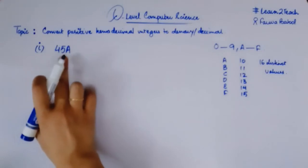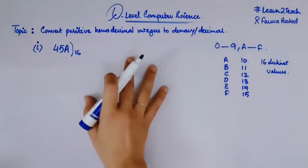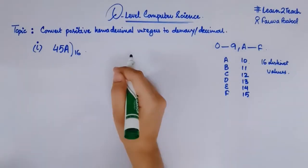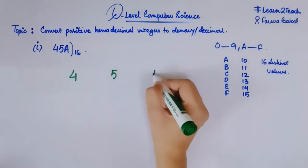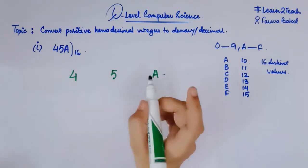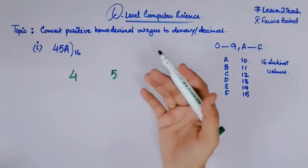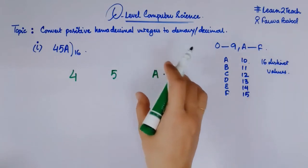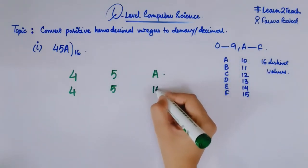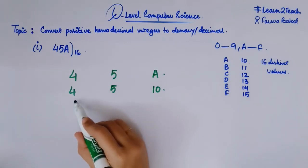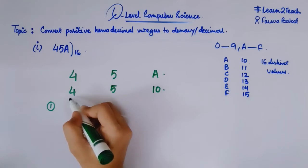My first step would be to write these numbers with some space: 4, 5, A. I need to change this A in terms of its numeric value because I am doing operations on it, so I need a numeric value for this alphabet. So 4, 5, and for A I have 10. Now step number 1 is to assign the powers of 16 to these digits in ascending order starting from the very right. The rightmost digit A equals 10, assigned 16 raised to the power 0; moving left, 5 gets 16 raised to the power 1; and 4 gets 16 raised to the power 2.